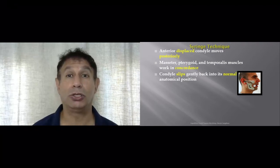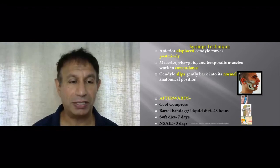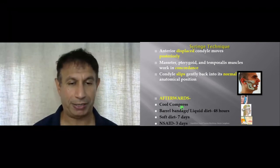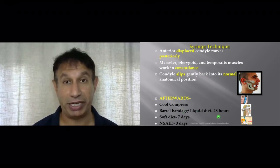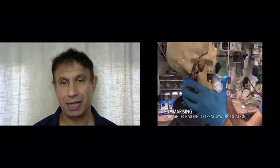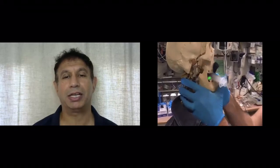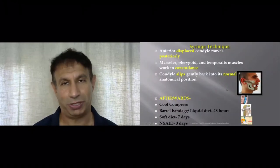Once the jaw joint has been reduced and returned to its correct location, the first thing to do is apply a cool compress, then put a barrel bandage on the patient. Prescribe a liquid diet for 48 hours, soft diet for seven days, and anti-inflammatory drugs for three days. After reduction, if one side does not go back automatically, simply repeat the process on the opposite side.